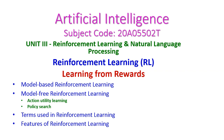In today's artificial intelligence class we will see reinforcement learning, the first topic from the third unit. From reinforcement learning we will learn: learning from rewards, model-based reinforcement learning, and model-free reinforcement learning. In model-free reinforcement learning there are two methods: action utility learning and policy learning. After that we will see the terms used in reinforcement learning and the features of reinforcement learning.